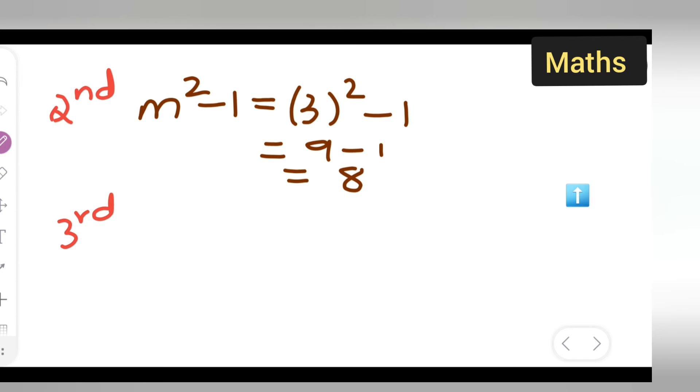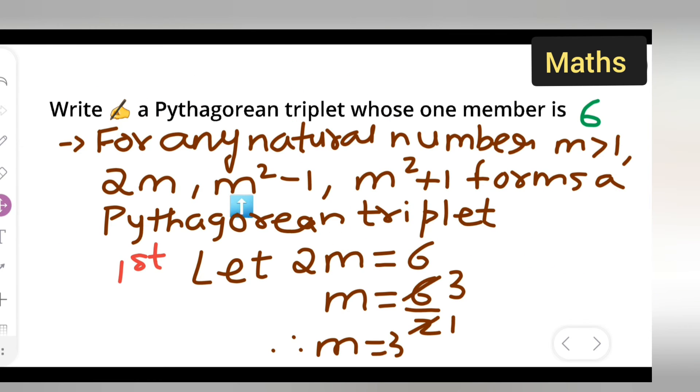Next, m² + 1 equals 9 + 1, which equals 10. These are the three Pythagorean triplets: this is for the first part, this is for the second, and this is for the third part.